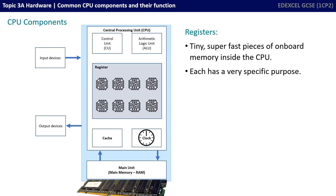Next we have the registers. These are tiny, super fast pieces of onboard memory inside the CPU. Every single one has its own very specific purpose. At GCSE level you're not required to know the different types of registers or their names, just know that there are many different types.